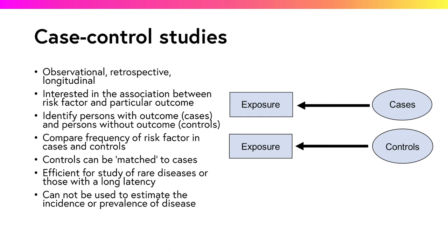The selection of controls needs to be carefully considered to minimise confounding factors. One way to do this is to match controls to cases by known confounding factors, commonly age and gender. The sample will then be balanced across those confounding factors.